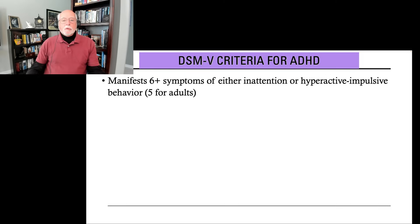The DSM-5 says we need six symptoms for diagnosing children and teens, but by adulthood you only need five symptoms on either list to contribute toward the diagnostic criteria.